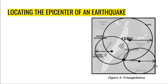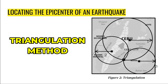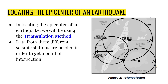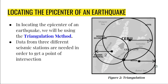What method will we be using? We will be using what we call the triangulation method. Why is it called the triangulation method? Because, just like a triangle has three sides, in this method you need three different seismic stations to get a point of intersection, just like in this image.